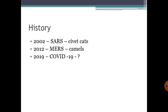Looking at the history, in 2002 SARS originated in civet cats — small mammals sold in meat markets of China — which carried the viruses from horseshoe bats to humans. In 2012, MERS originated in camels. And in 2019, COVID-19 originated and the source is still a question mark.